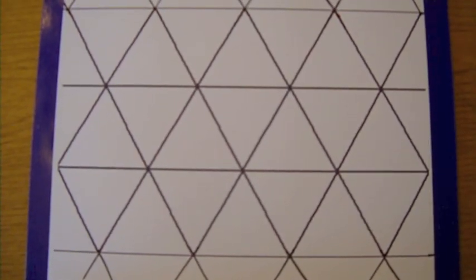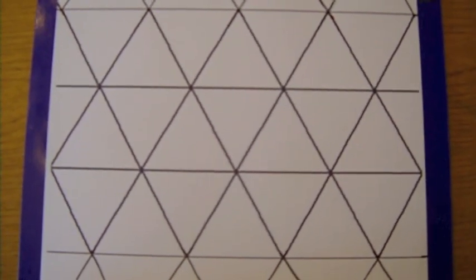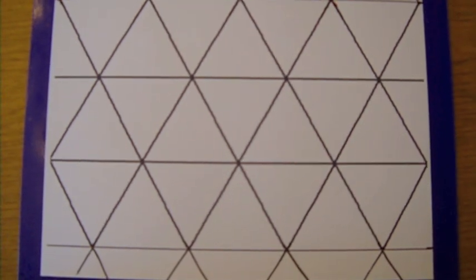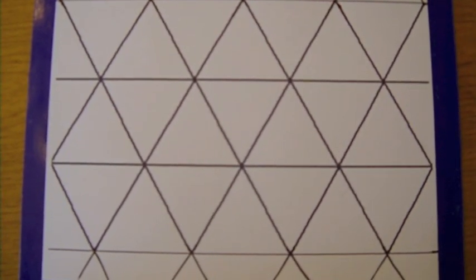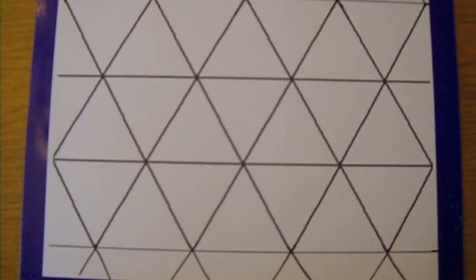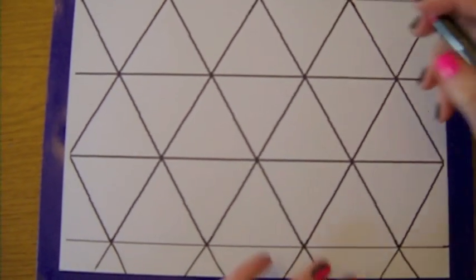Here is a tessellation made of equilateral triangles. This is an example of a tessellation made by reflections. Reflections are a form of rigid transformation that flips the figure across a line. Here is the line of reflection.